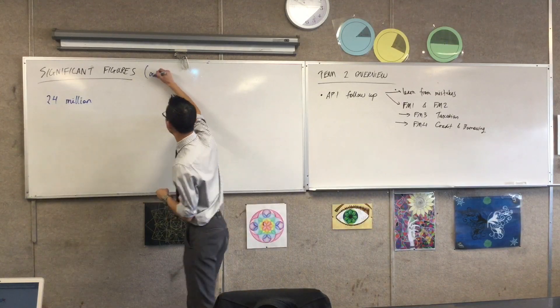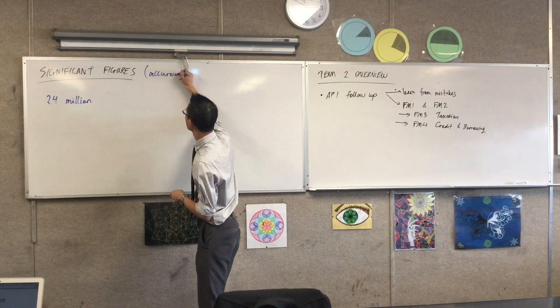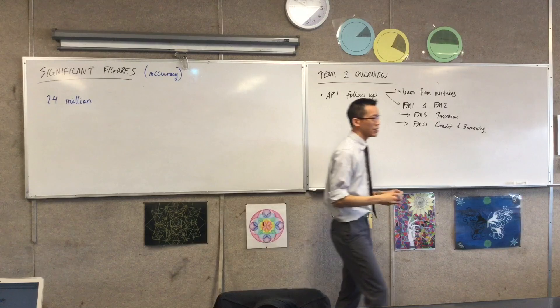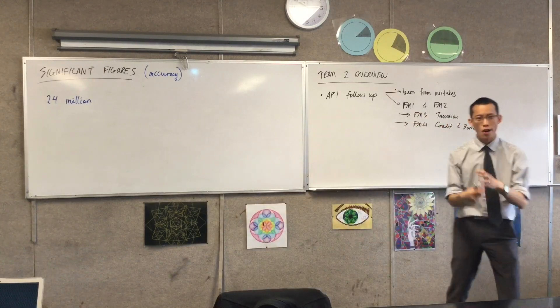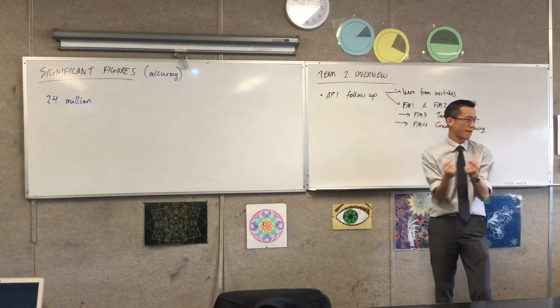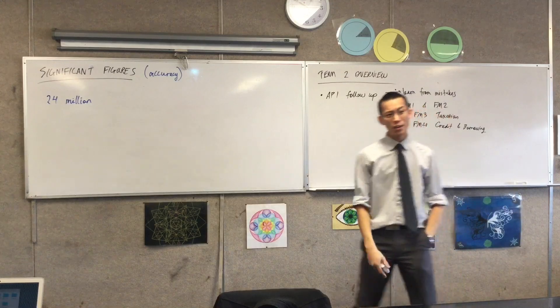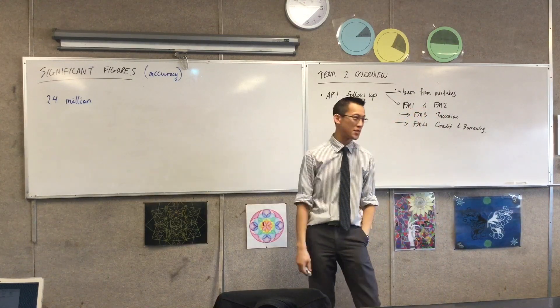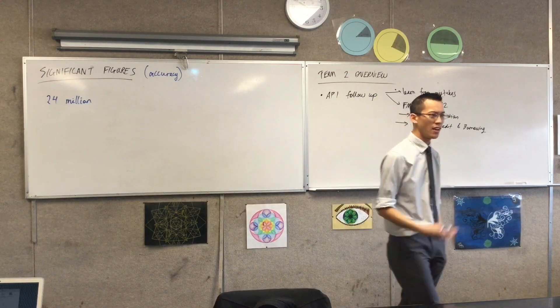In sort of brackets over the side here, I'd like you to write brackets of accuracy, because significant figures are about us wrestling with this problem of accuracy. So this number, 24 million, anyone who can guess as to why this might be an important number to us?